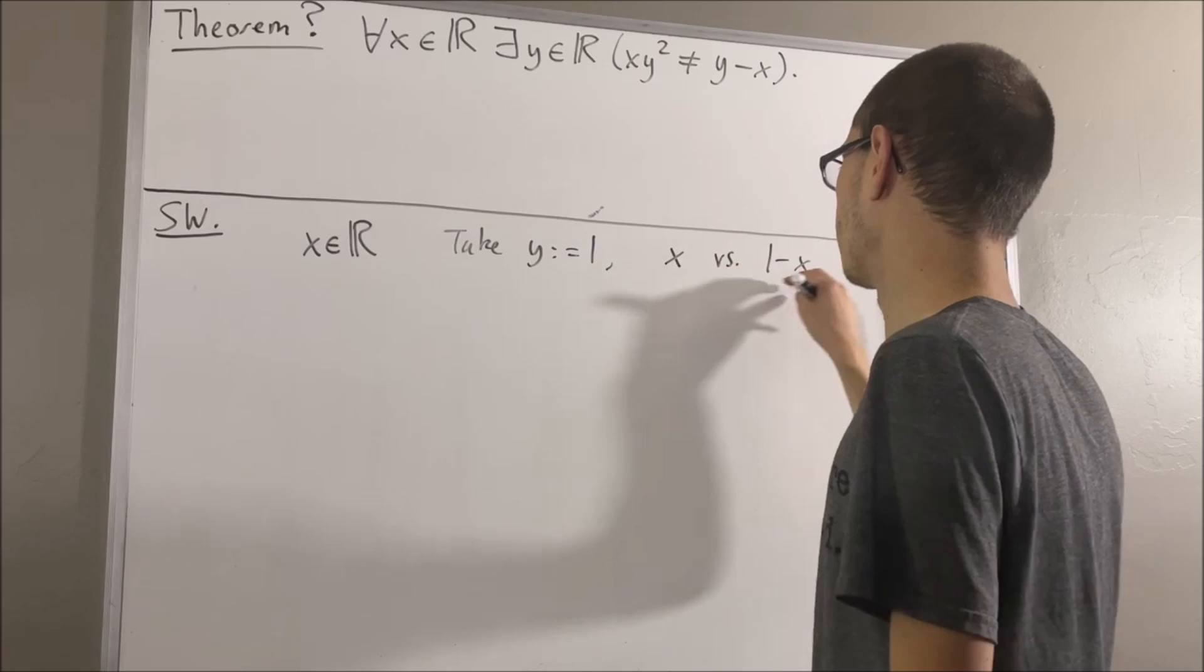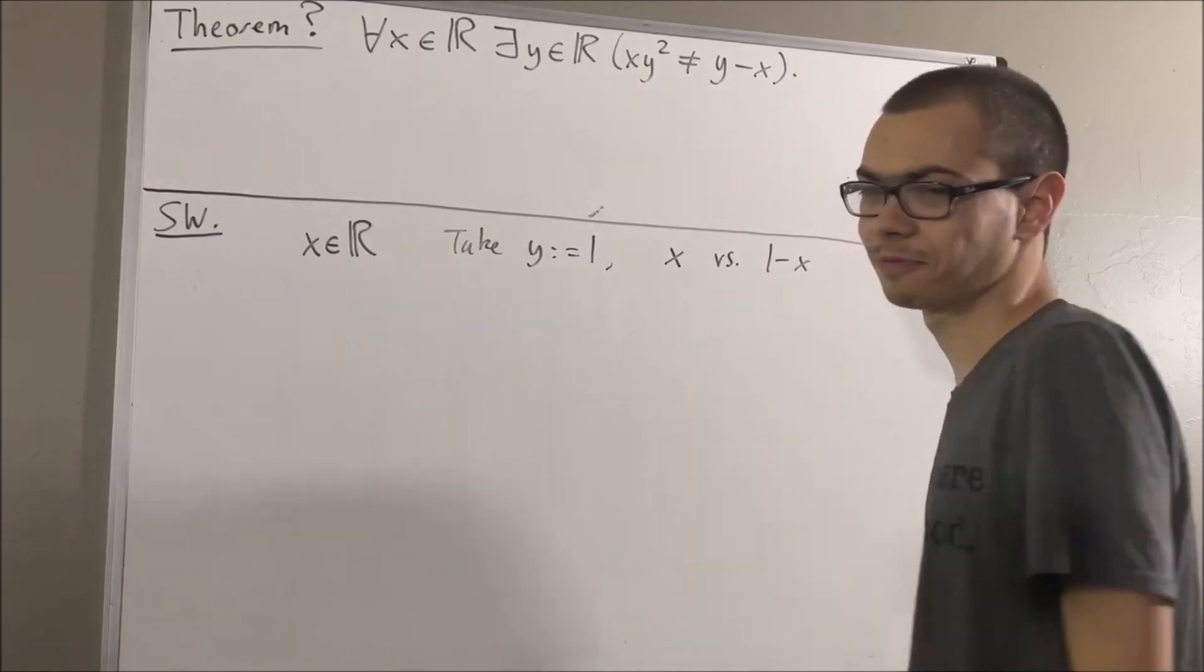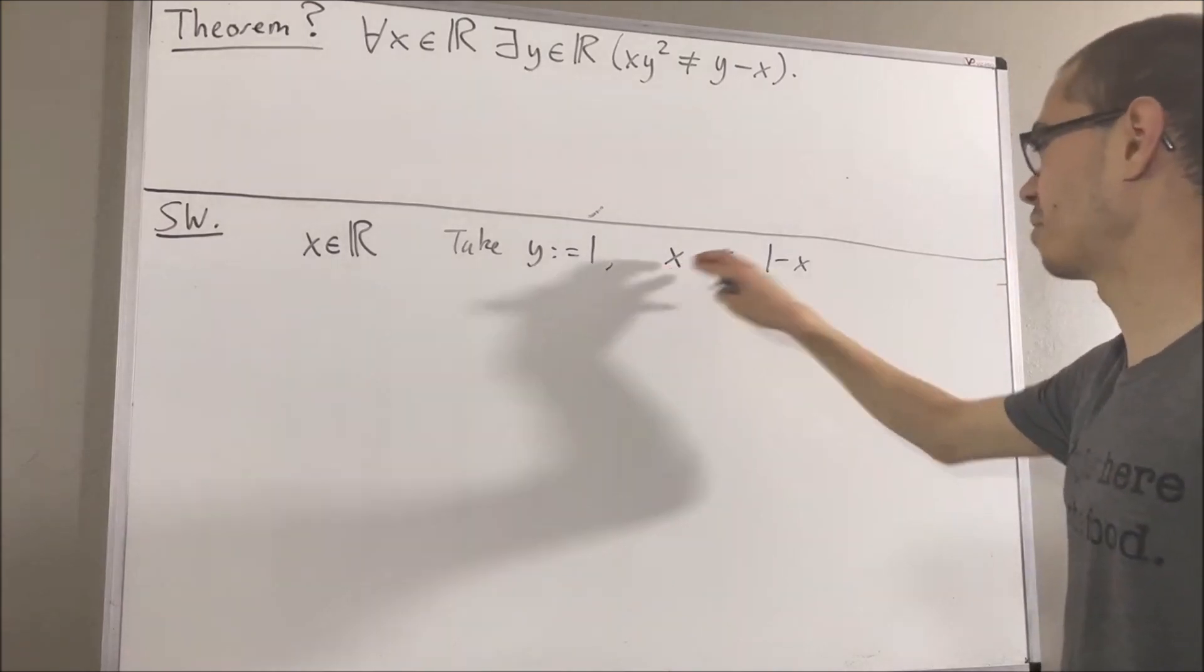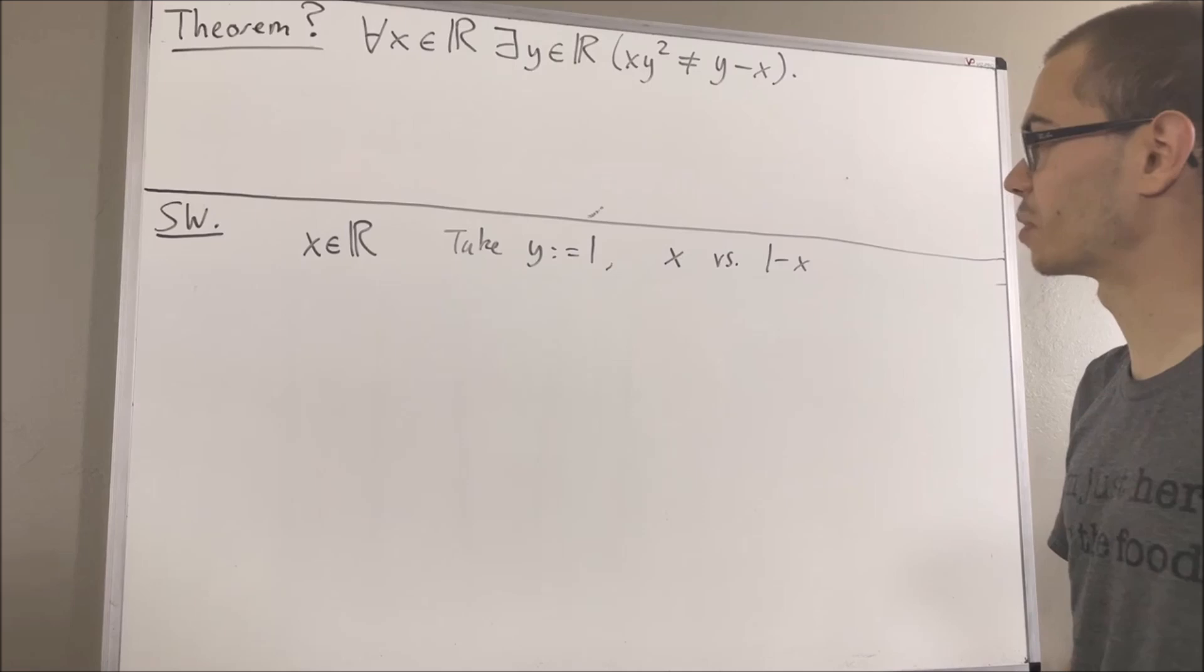So we've got to show x is not equal to one minus x. Well, if x was equal to one half, that doesn't work. For some reason I saw x and one plus x in my mind, but that's not what it is. Never mind, that doesn't work.